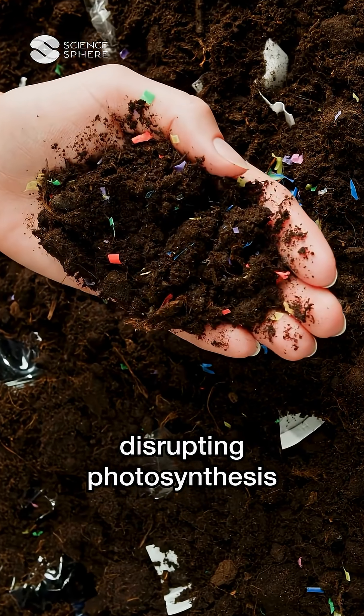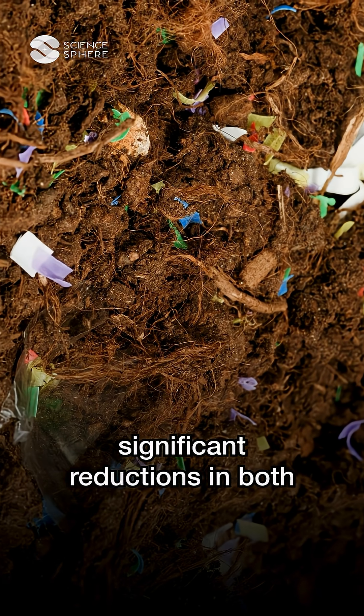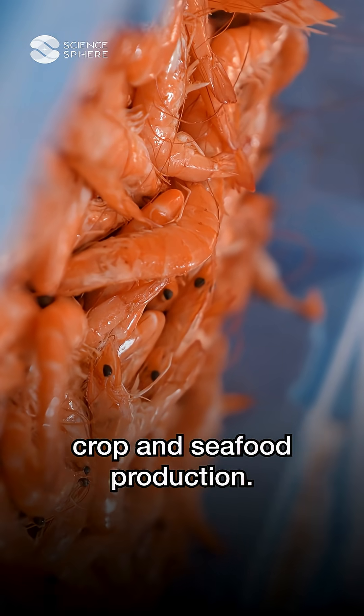Microplastics are now disrupting photosynthesis, and the impact could be massive. A new study has found that they can cause significant reductions in both crop and seafood production.